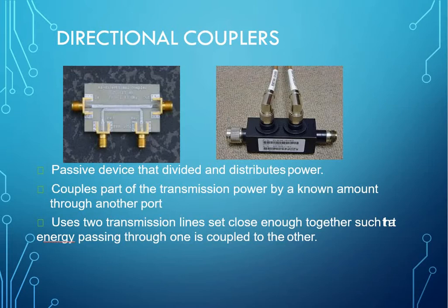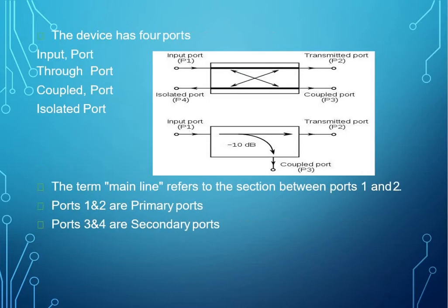Coming to directional coupler, it is a passive device that divides and distributes power. It is built in waveguide assemblies which can sample a small amount of microwave power for measurement purposes. It uses two transmission lines set close enough together such that energy passing through one is coupled to the other.